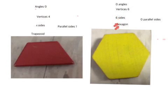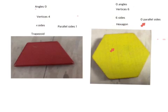The hexagon has zero right angles, six vertices, and six sides, and no parallel sides.